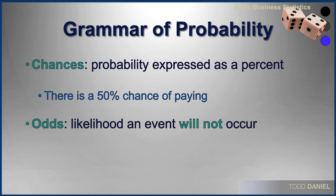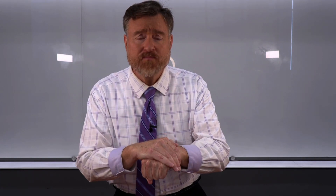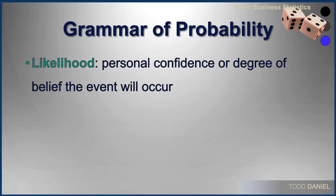Odds are the likelihood that an event will not occur. Odds are often expressed with two numbers separated by a colon. For instance, the odds of paying are one in two — one side of a two-sided coin — which could also be expressed as two to one odds. Likelihood is not so much mathematical as it is more of a personal confidence, or some degree of your belief about whether or not the event will occur.